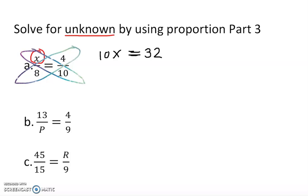We need to find our variable, so we're going to divide by 10 on both sides. That cancels out, so we clearly have x equal to 3.2.